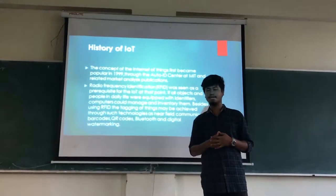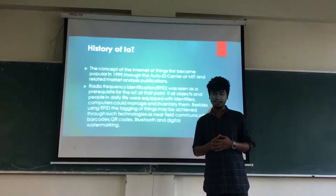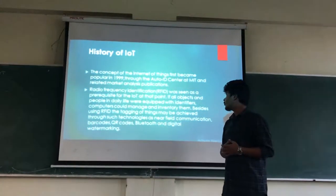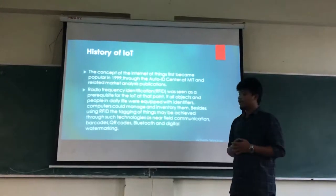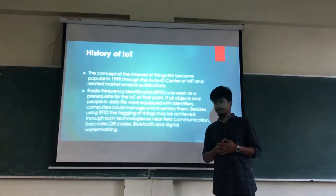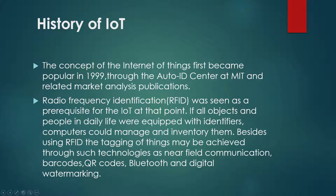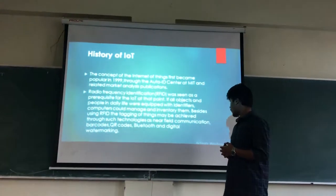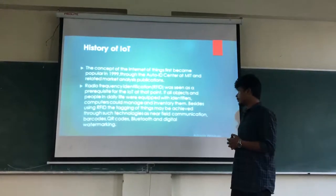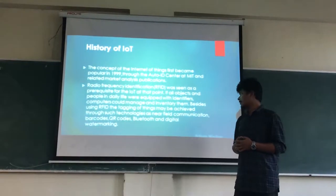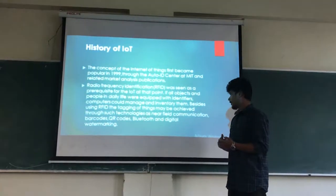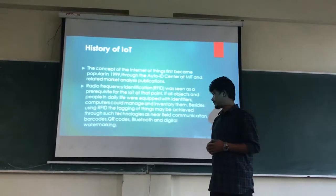Now let's go back to the history of Internet of Things. The concept was first introduced in the year 1999 through the Auto-ID Center at MIT and related market analysis publications. Radio Frequency Identification — RFID — was seen as a prerequisite for the Internet of Things. At that point, if all objects and people in daily life were equipped with identifiers, computers could manage and monitor them. Besides RFID, the tagging of things has been achieved through technologies such as near-field communication, barcodes, QR codes, Bluetooth, and digital watermarking.